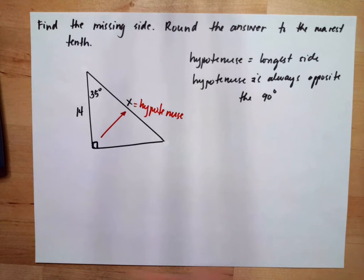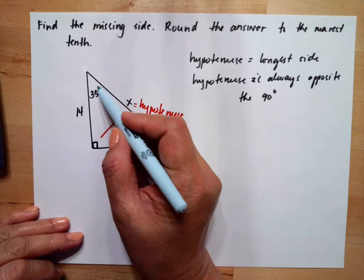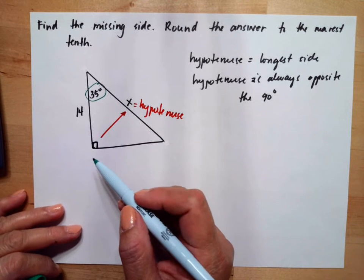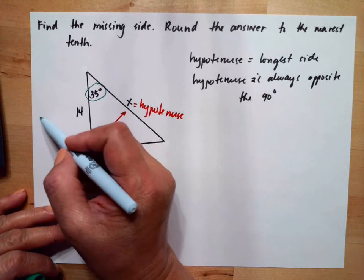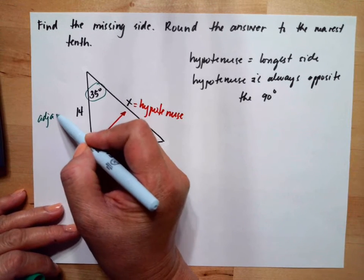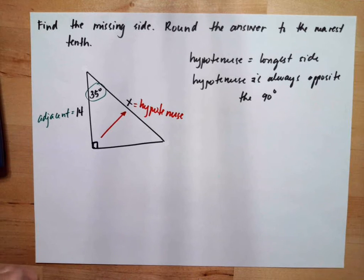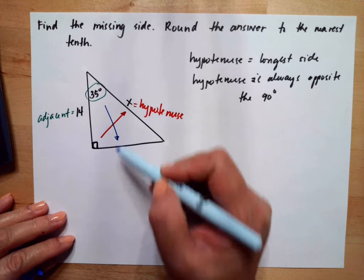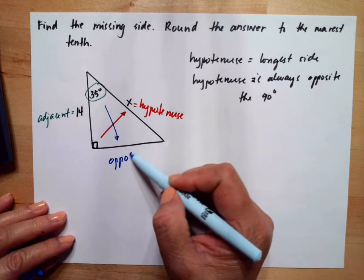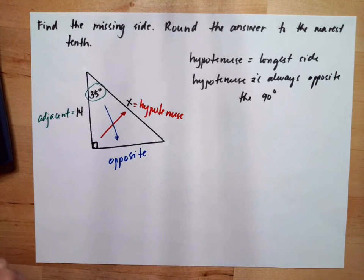The given angle is 35. This is the given angle. And beside the given angle is the adjacent. So this is adjacent. And away from the given angle is called the opposite.